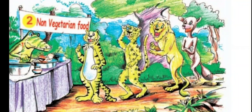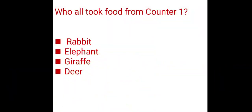Now let's look at counter one. Rabbit, elephant, giraffe, deer — they eat only plant food. There are also cow, goat. These are plant food animals — herbivores.